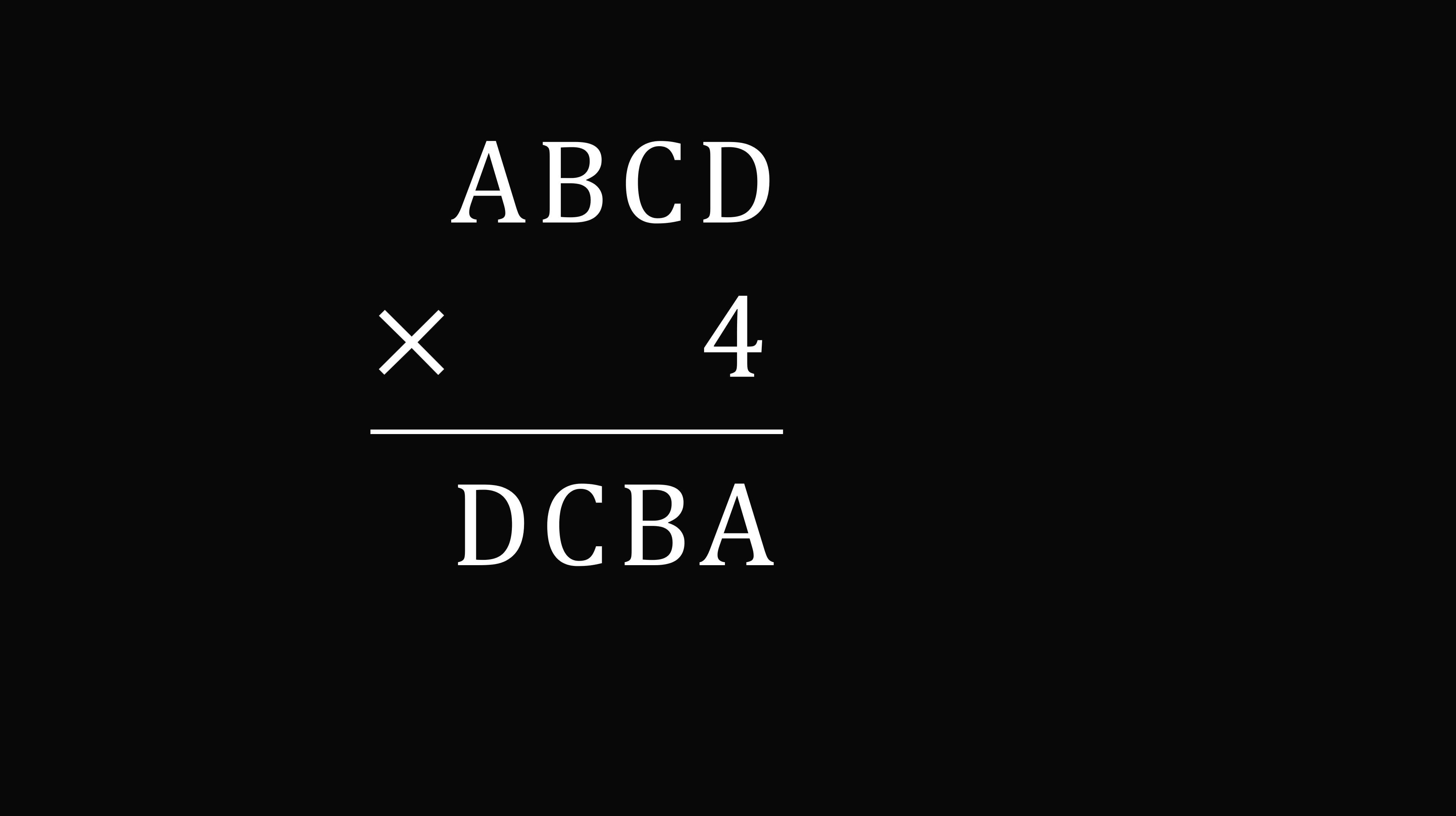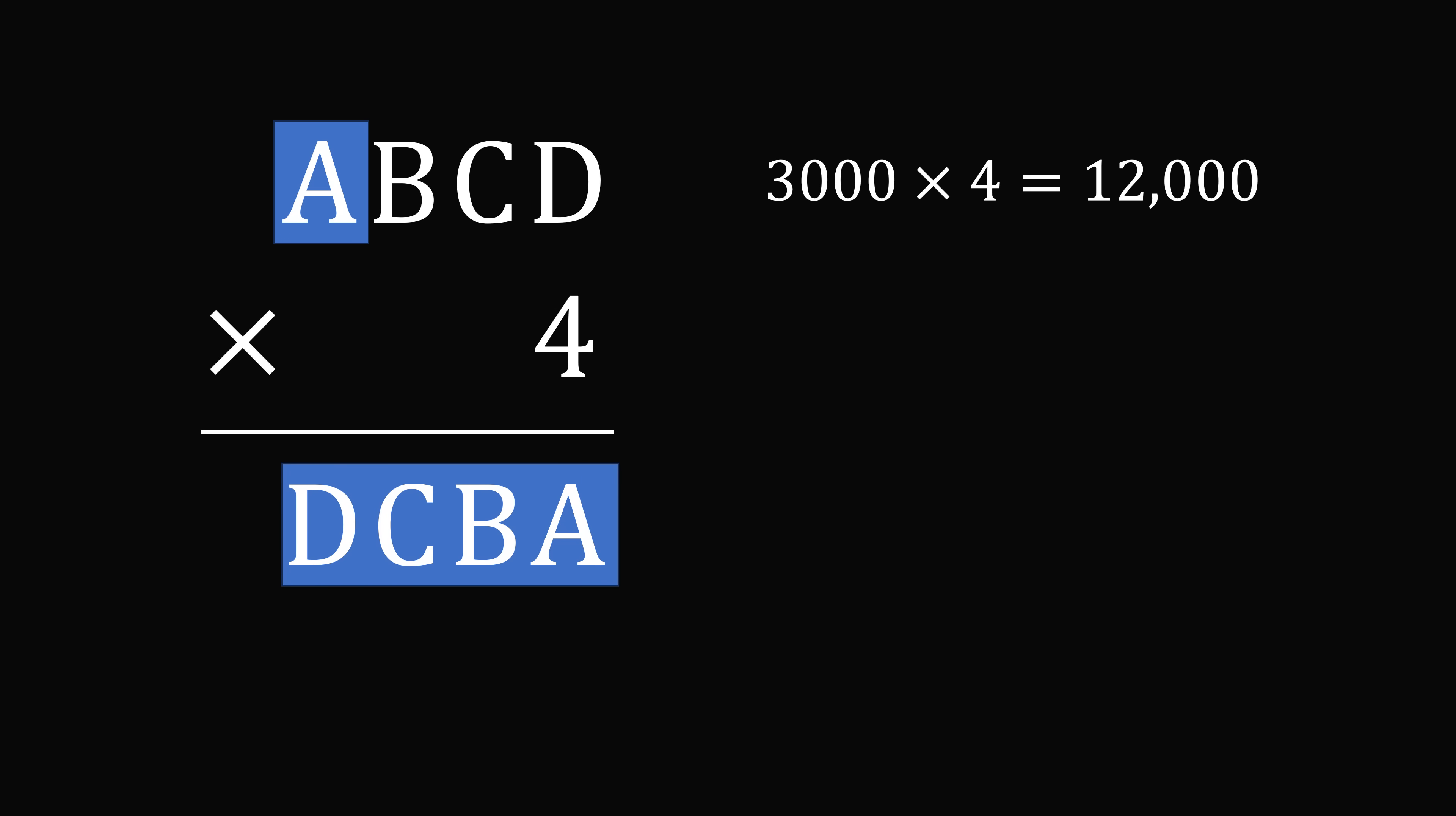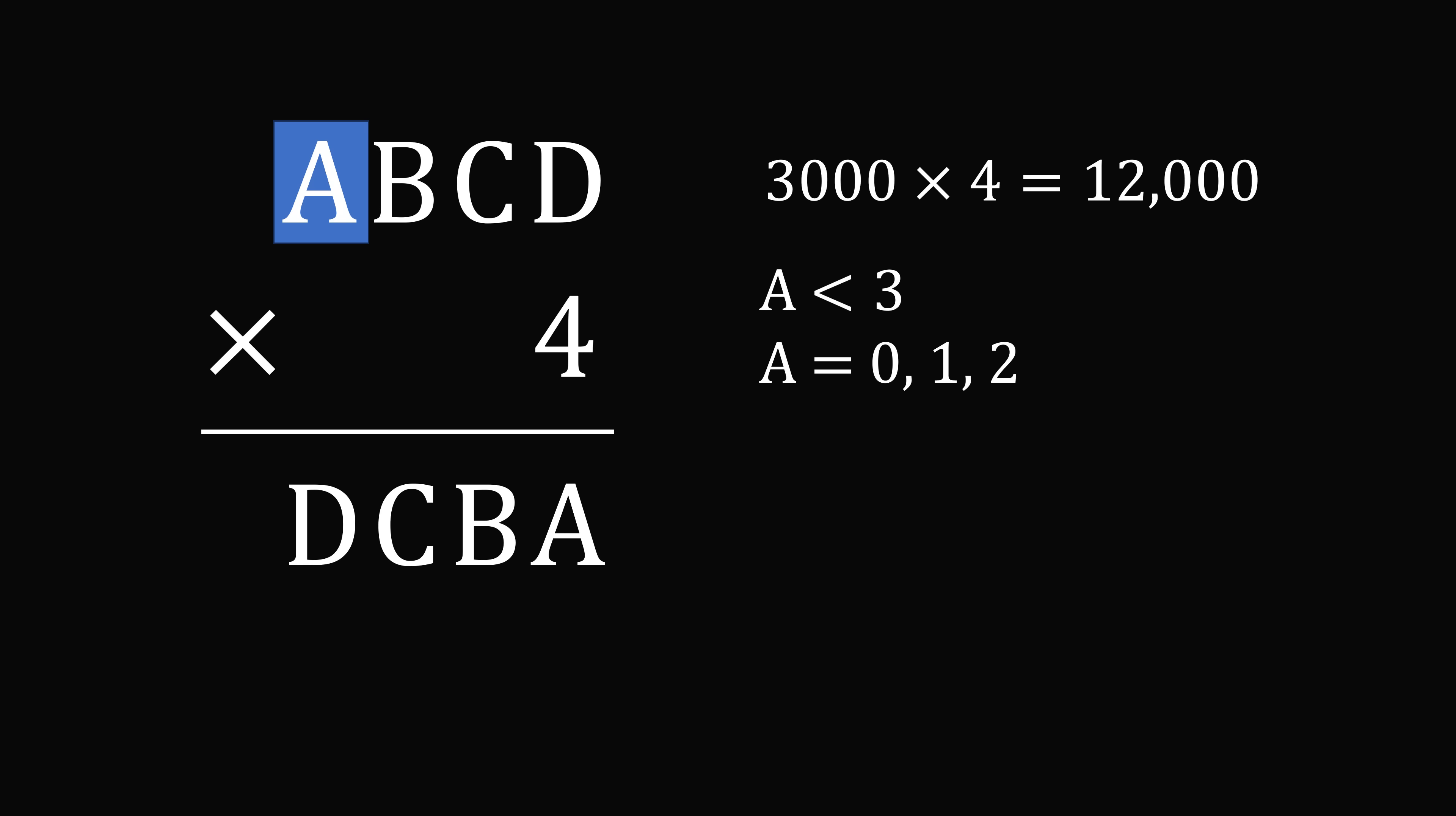So where do we begin? Let's start out by solving for the letter A. Notice that 3,000 times 4 is equal to 12,000, which is a 5-digit number. But we need the result to be a 4-digit number. So it's not possible for A to be a value that's 3 or larger. The result would be too big. So we need A to be less than 3, which means A is equal to 0, 1, or 2.